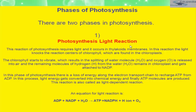First we will study the light-dependent reactions. As the name implies, they require sunlight. In light-dependent reactions, energy from sunlight is absorbed by chlorophyll and converted into stored chemical energy in the form of electron carrier molecule NADPH — nicotinamide adenine dinucleotide phosphate — and energy currency molecule ATP.